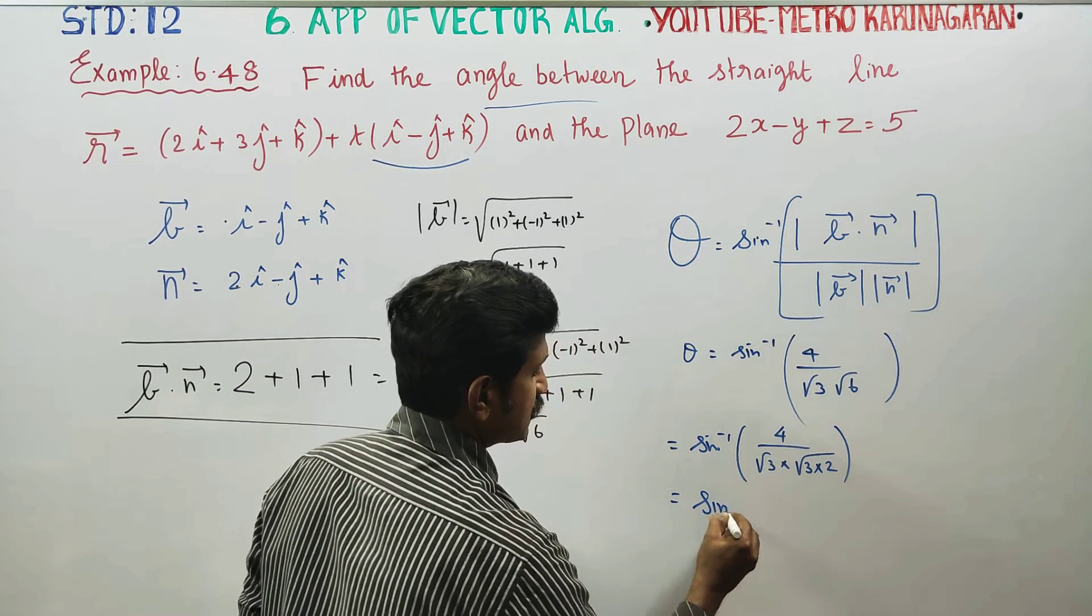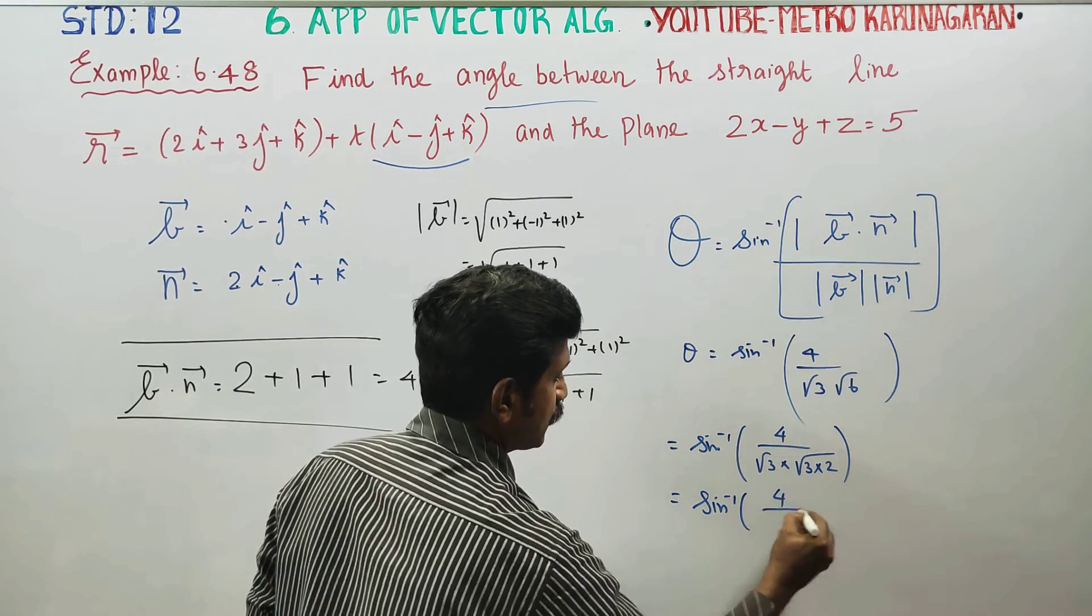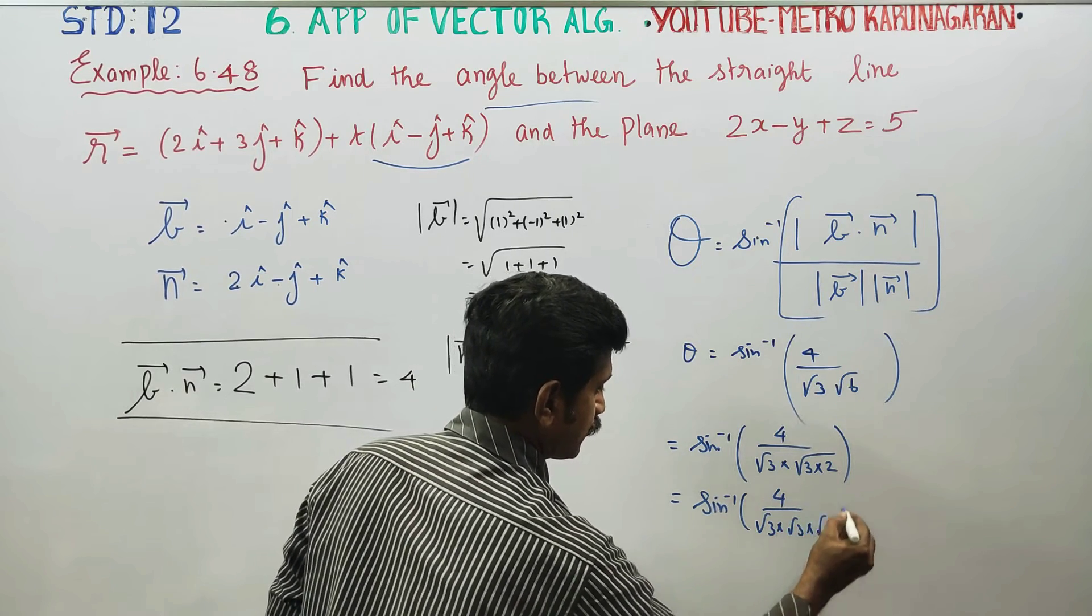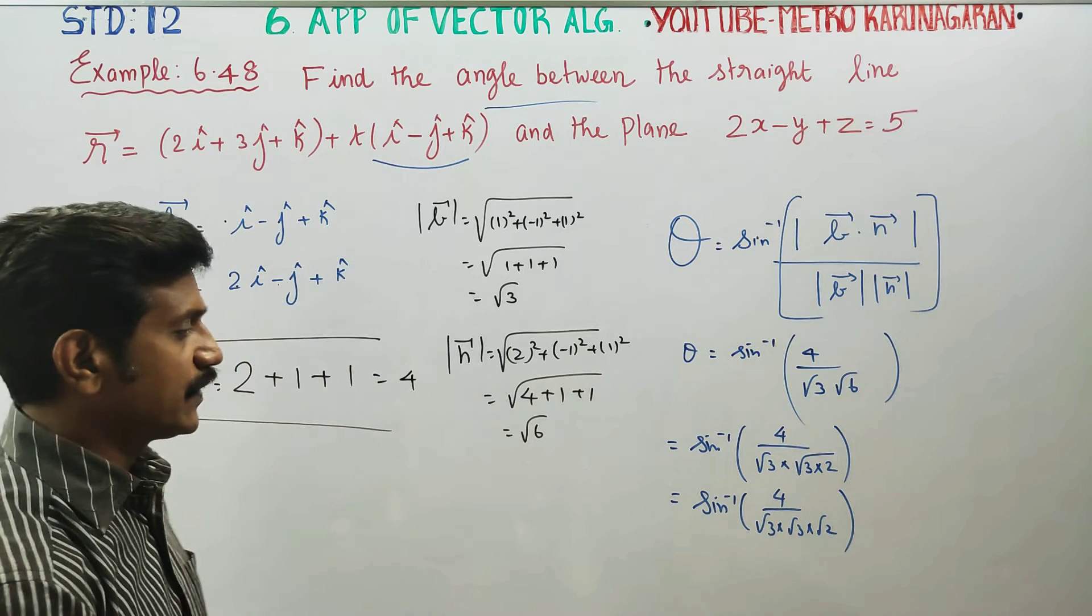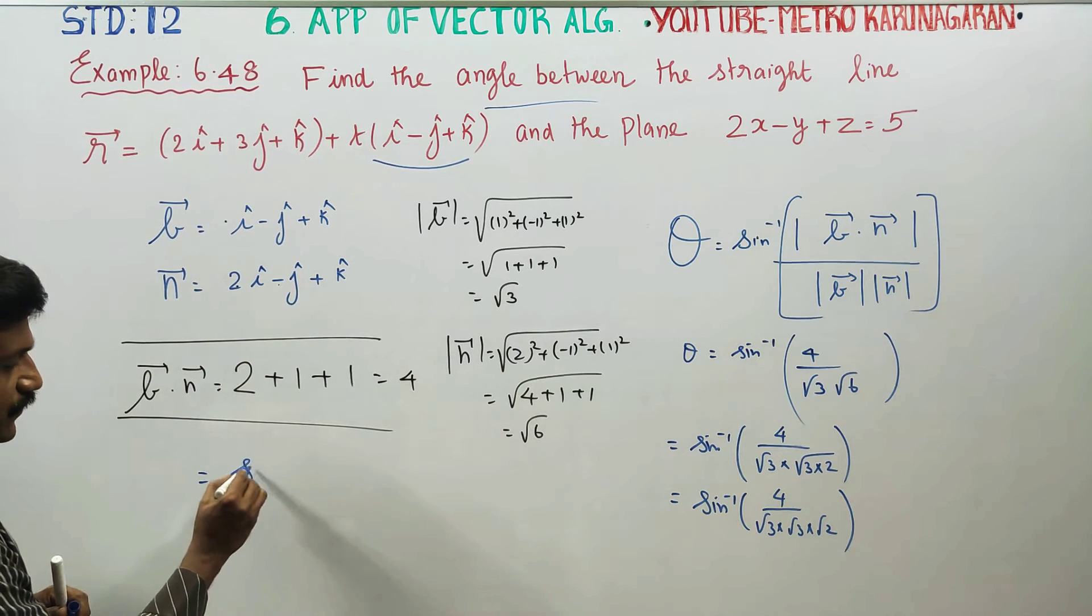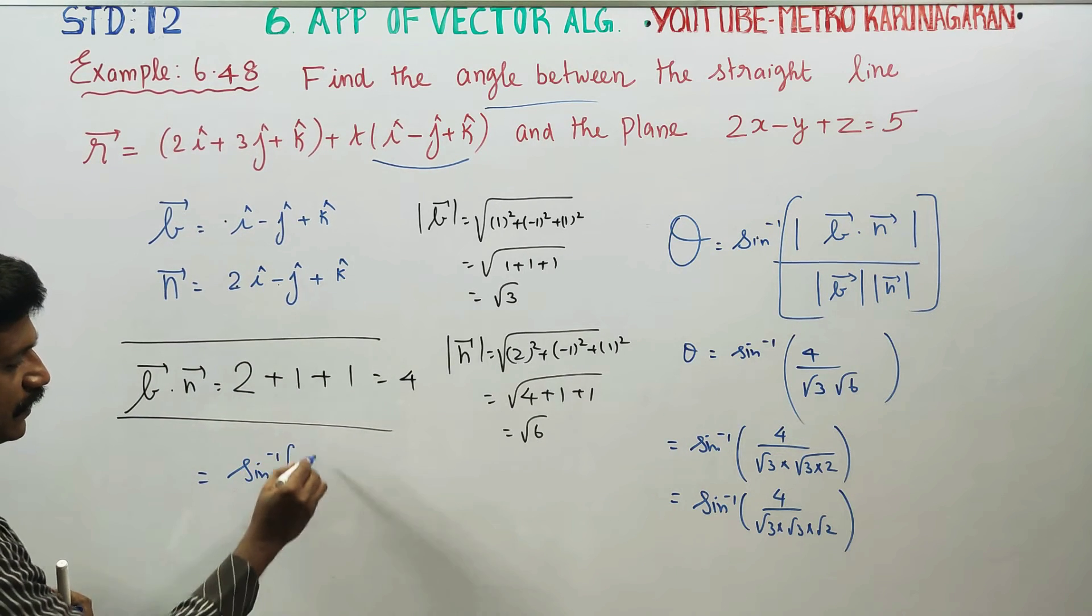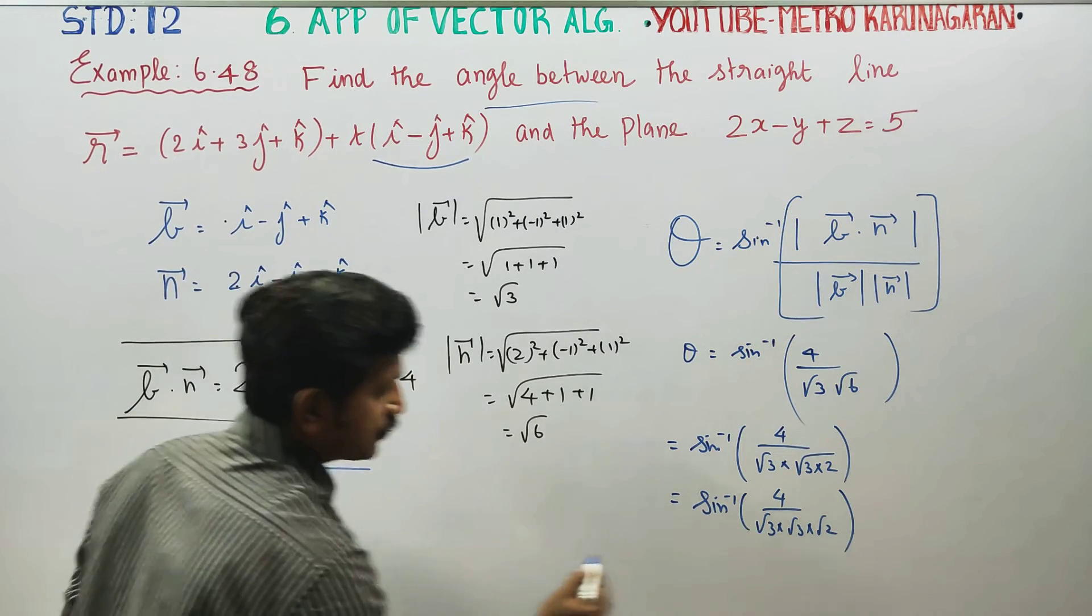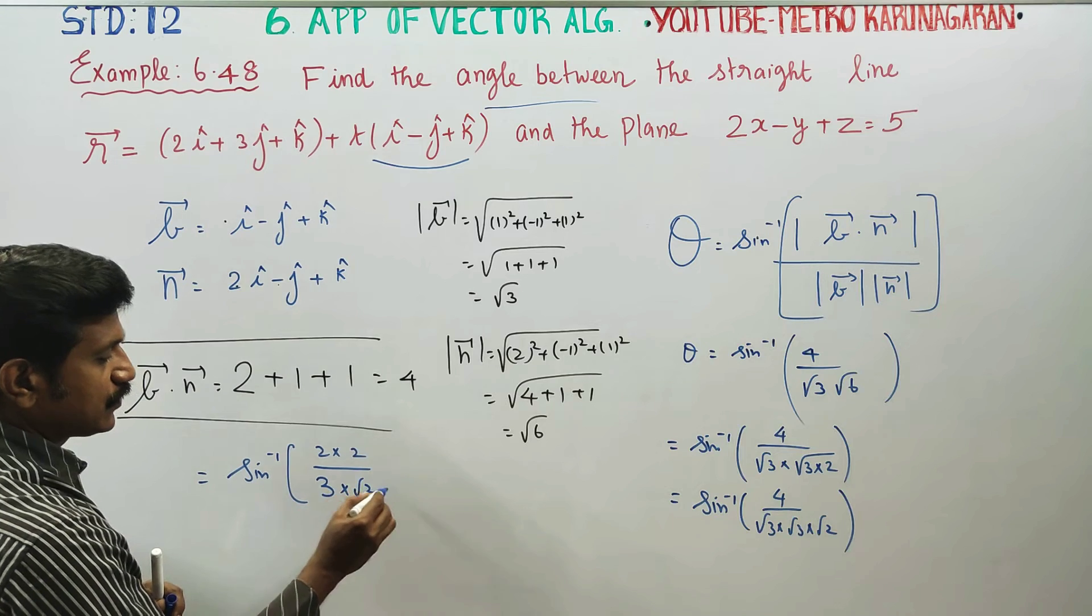Is equal to sin inverse of 4 by root 3 into root 2. Sin inverse of 4 can be written as 2 into 2. Root 3 into root 3 can be written as 3 into root 2.